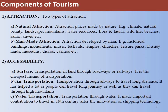Next, we learn about the components of tourism, referred to as the A's of tourism. The first component is Attraction, which has two types: natural attraction and man-made attraction. Natural attractions include mountains, water resources, flora and fauna, and wildlife — all naturally gifted. Man-made attractions include festivals, temples, leisure parks, historical buildings, and other constructed sites.